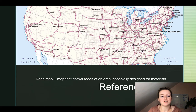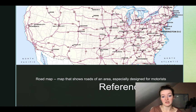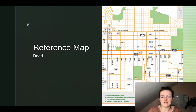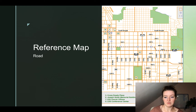This map obviously doesn't show all roads but does show major interstates and highways. This one here is also a road map — you'll notice it's at a much different scale, so we are looking at a town rather than a country. And all of these roads, or nearly all of them, are in a grid pattern.